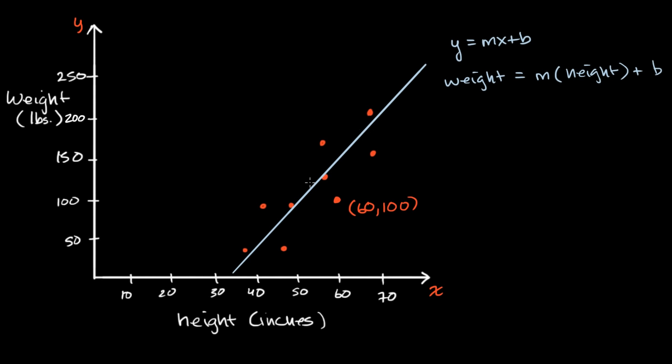But clearly, it can't go through, one line won't be able to go through all of these points. There is going to be, for each point, some difference, or not for all of them, but for many of them, some difference between the actual point and what would have been predicted by the line. And that idea, the difference between the actual point and what would have been predicted given the height, that is called a residual. A residual for each of these data points.